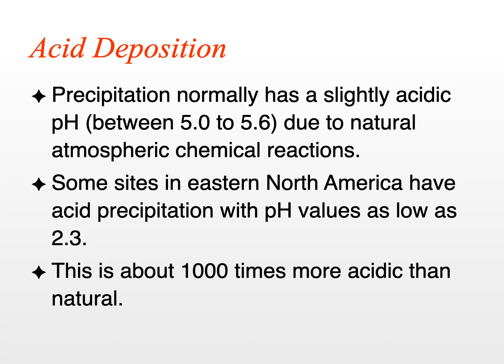If you were to take a sample of precipitation and measure its pH, you would find that it's normally acidic. Precipitation normally has a pH somewhere between 5.0 to 5.6. This is due to natural atmospheric chemical reactions, with many of the acids actually coming from decomposition processes occurring within the oceans. You'll find that precipitation along the coast is a lot more acidic than precipitation that falls further inland.